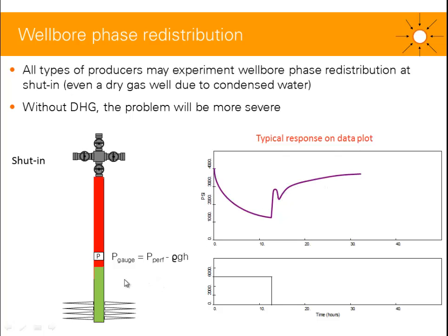But on some occasions, liquid might be re-injected into the reservoir due to gravity or gas expansion in the tubing, and then the gas-liquid interface might go back down the well. Now the density below the gauge is changing over time — the fluid below the gauge is getting lighter and lighter. So the pressure of the gauge will increase not only due to the PBU, but due to this density getting smaller and smaller. This will have the same effect as the PBU and will be quite difficult to detect. The problem with re-injection of liquid into the reservoir is that it can take quite a while — for example, a couple of days.